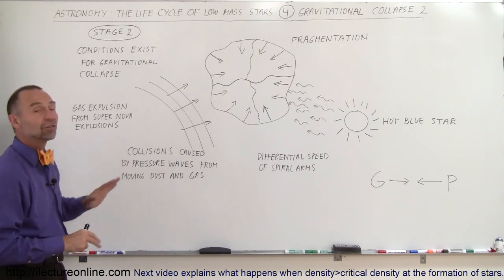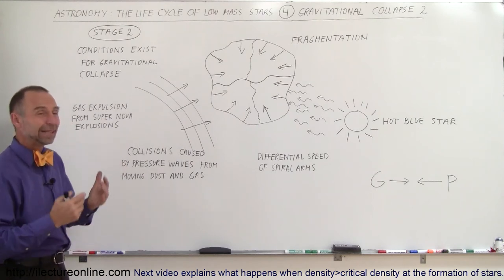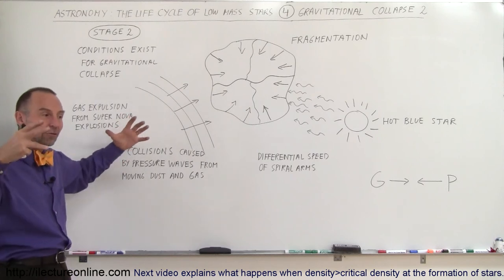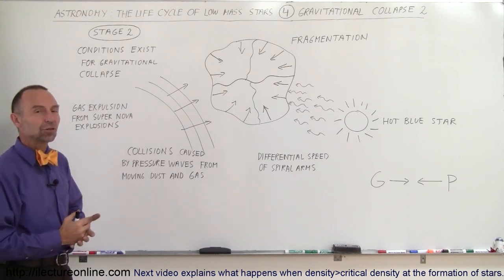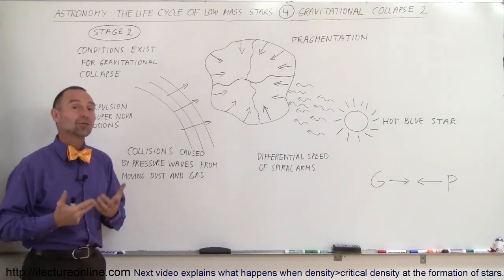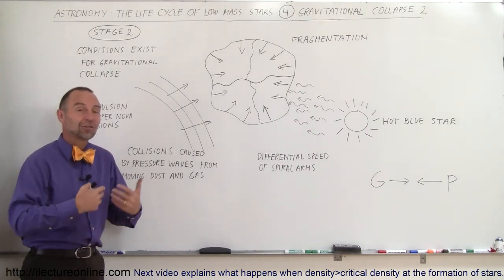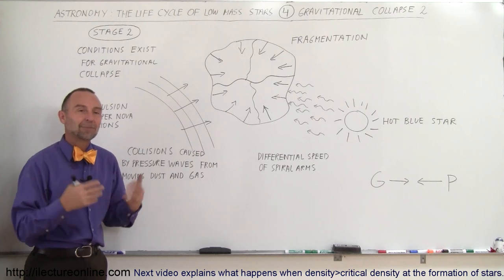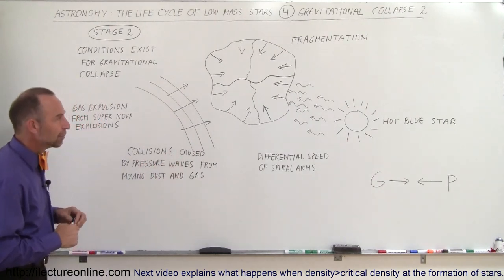But usually it does require this external influence because on its own there's just not enough gravitational force to overcome the pressure pushing back, keeping these clouds from collapsing. Maybe that's why it's taken so many billions of years for stars to still continue to form and collapse from these big regions of dust and gas in our galaxies.